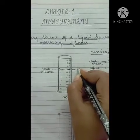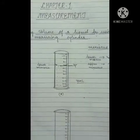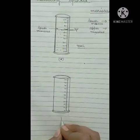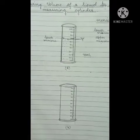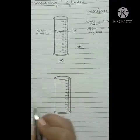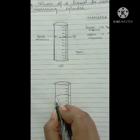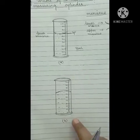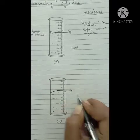Keep your eye in line with the container. Now in the second cylinder, we are going to measure the volume of mercury. We pour mercury into the cylinder and observe the meniscus. Mercury forms an upper meniscus, so we take the reading from the upper meniscus.